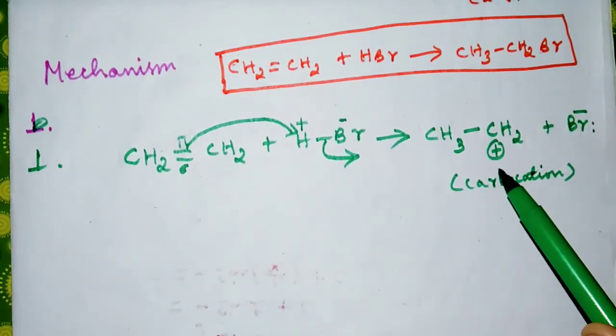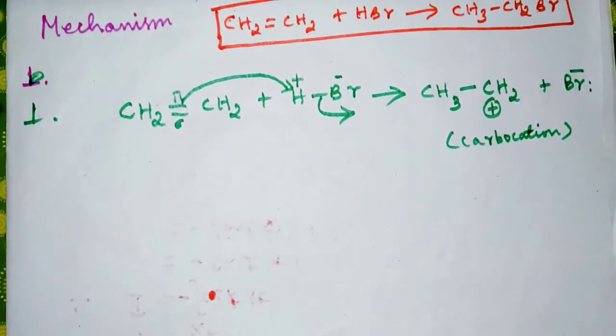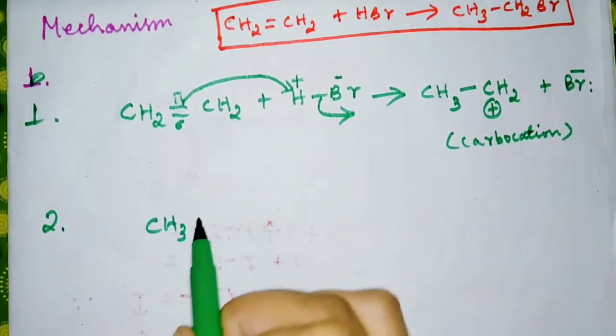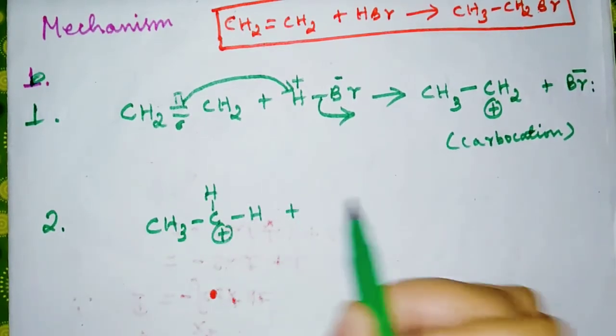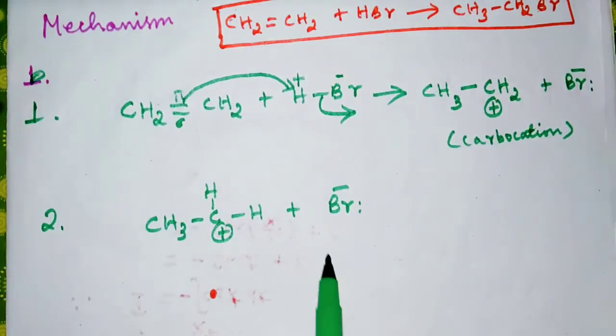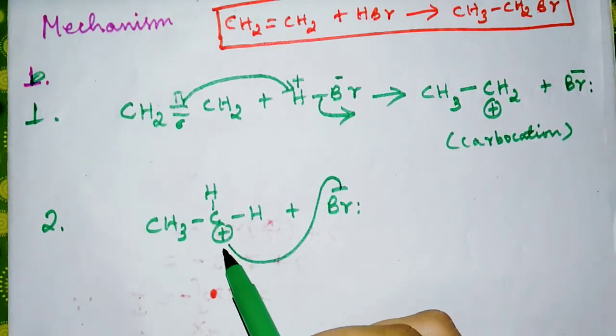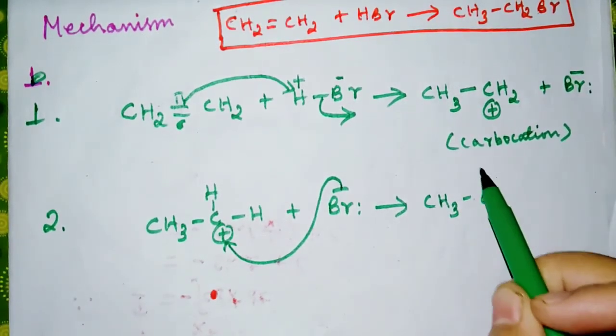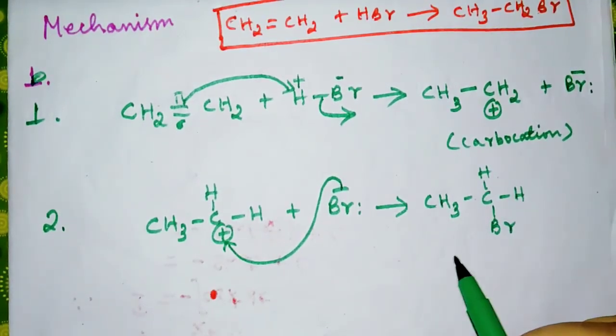Now in step two, this carbocation CH3-CH2+ with Br-. Here, Br- is a nucleophile, so it goes to neutralize this positively charged carbon. So we have CH3-CH2Br. This is bromoethane.